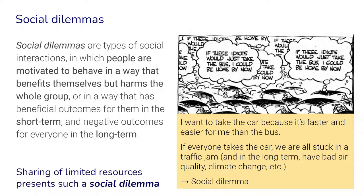What actually motivates everybody to take the car and not take the bus? Everybody might think for themselves: I want to take the car because it's faster, easier, and more convenient for me than taking the bus. But if everybody takes the car, we're all stuck in a traffic jam. This has negative consequences for everybody in the short term, but also in the long term, such as bad air quality, bad effects on climate change, and noise pollution. This is the essence of a social dilemma — the motivation in the short term creates bad consequences for everybody in the long term.